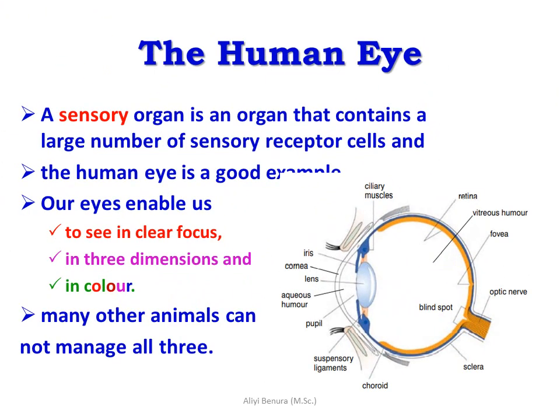The human eye — a sensory organ is an organ that contains a large number of sensory receptors. The cells in the human eye are a good example of these sensory receptors. Our eye enables us to see in clear focus, in three dimensions, and in color. Many other animals cannot manage all these three things.